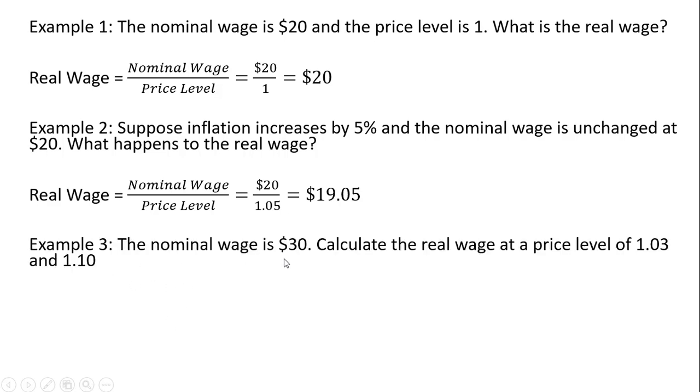Example 3: The nominal wage is $30. Calculate the real wage at a price level of 1.03 and 1.1. So $30 divided by 1.03 gives us a real wage of $29.13.